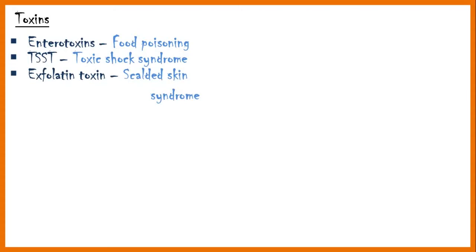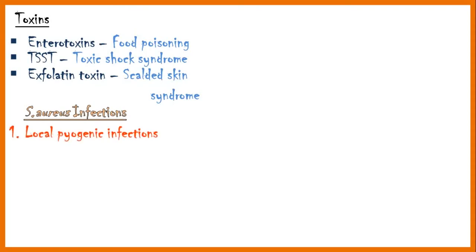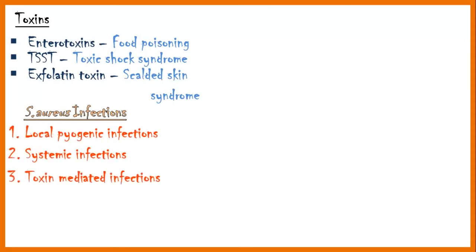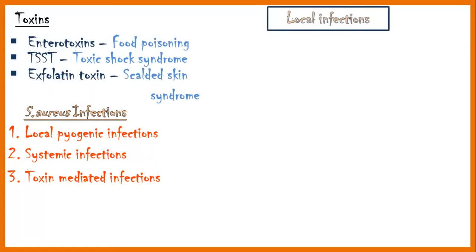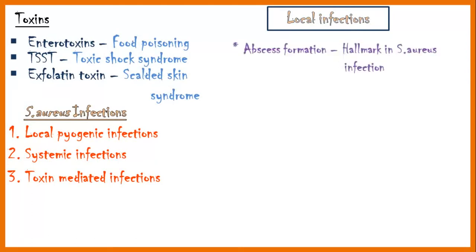Staphylococcal infections can be categorized into three groups: local pyogenic infections, systemic infections, and toxin-mediated infections. First, let's discuss about local infections. Whatever the organ involved, the lesions are characterized by abscess formation, which is a hallmark of staph infections.